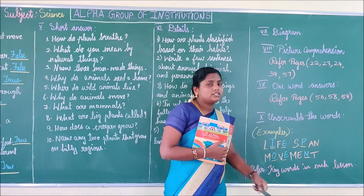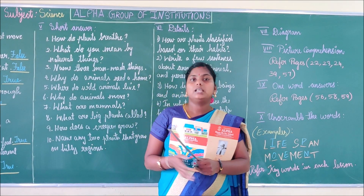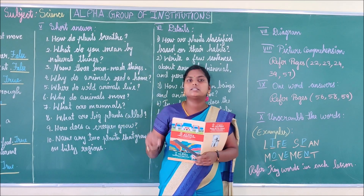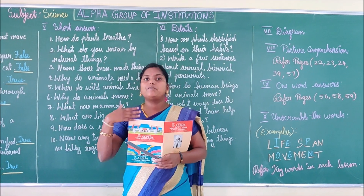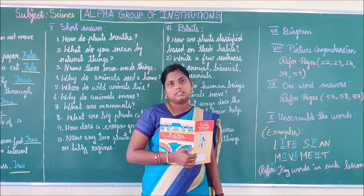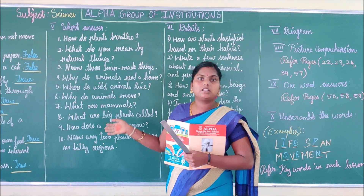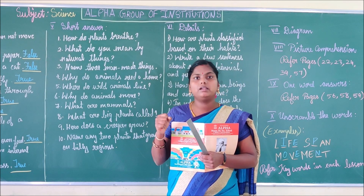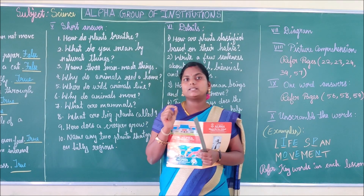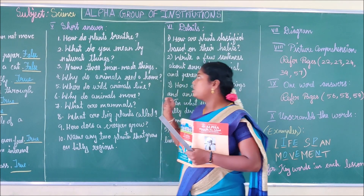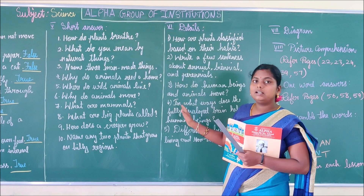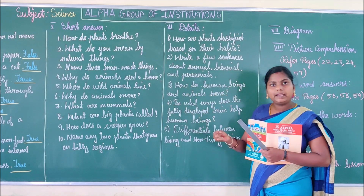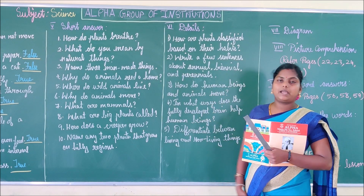Refer to the keywords in each lesson — read the key words given at the end of the lessons and read the full lesson carefully. Your revision is now over. Read thoroughly. Don't make spelling mistakes. Don't scribble or overwrite in your papers. Your paper must be neat and clean. Use a pencil. Write the date, subject and your name. Don't forget to write your name. Submit your paper on time. Thank you, children.